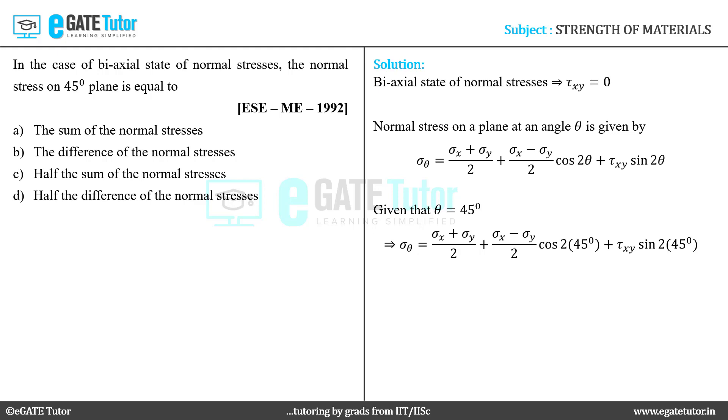Since tau xy equals zero, we get sigma theta. Now the second term is also zero because cos 90 degrees equals zero. Therefore, we are left with sigma theta equals